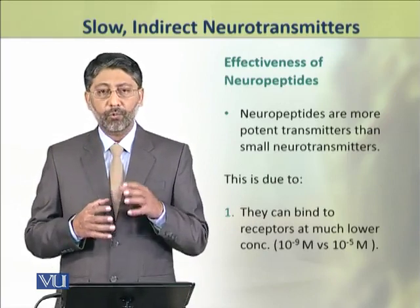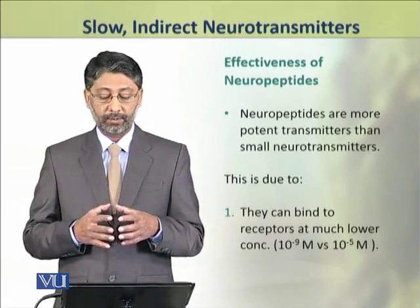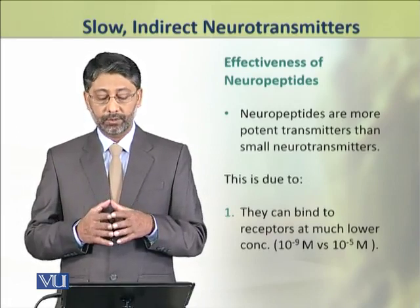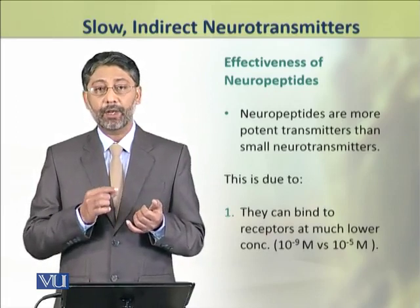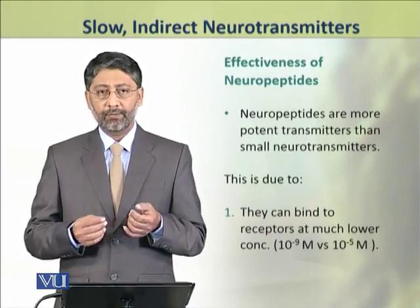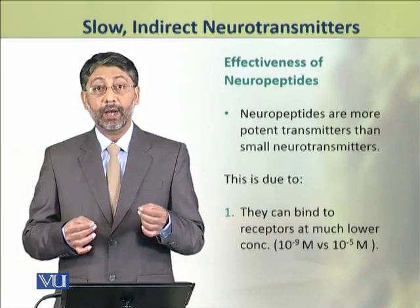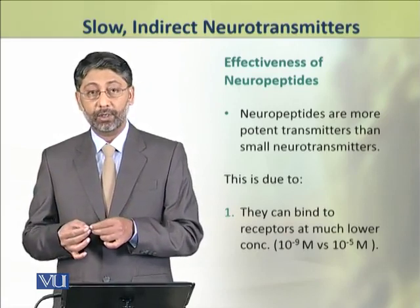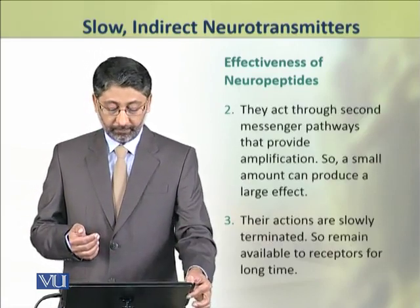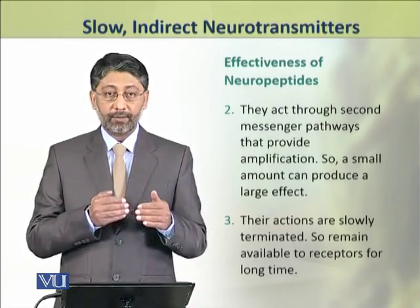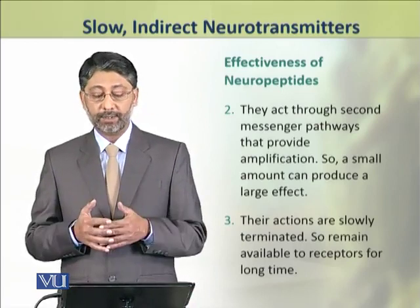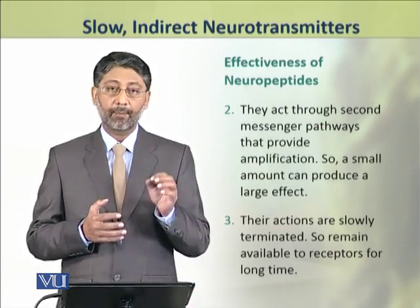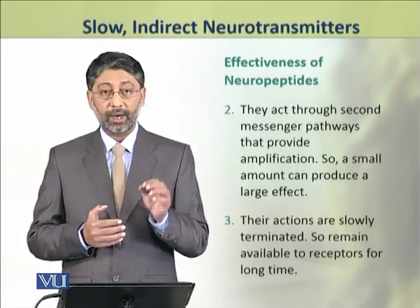Neuropeptides are more potent neurotransmitters than small neurotransmitters. This is because they bind at very low concentrations — they are active at 10 to the power of minus 9 molar, compared to 10 to the power of minus 5 molar for other substances. Additionally, they act through second messenger pathways that provide amplification, so a small amount can produce a large effect.